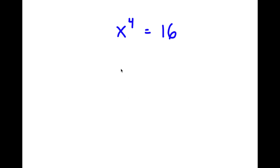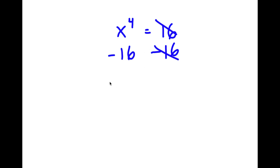So in this problem, I have x to the power of 4 is equal to 16. I'm going to first start by subtracting 16 on both sides. These two cancel out, and I'm left with x to the power of 4 minus 16 is equal to 0.